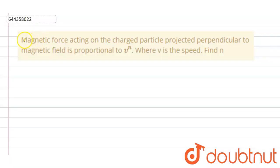Hello students, so the question is: magnetic force acting on the charged particle projected perpendicular to a magnetic field is proportional to v to the power n where v is the speed. Find n.